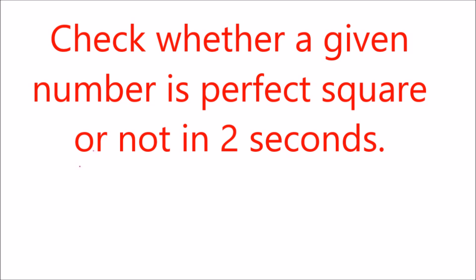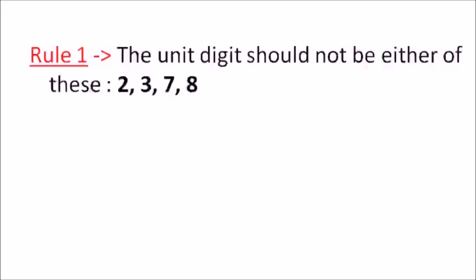So let's discuss the trick. The trick has just two rules. Rule number one: the unit digit of the number you're checking should not be either of these numbers — 2, 3, 7, or 8. The last digit of the number should not end with 2, 3, 7, or 8.